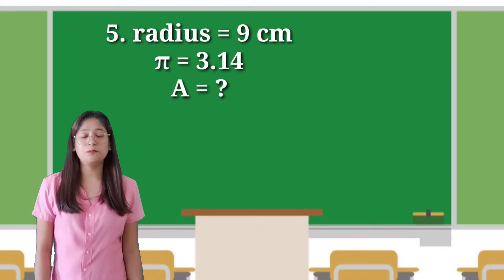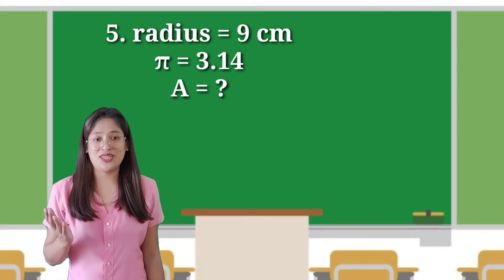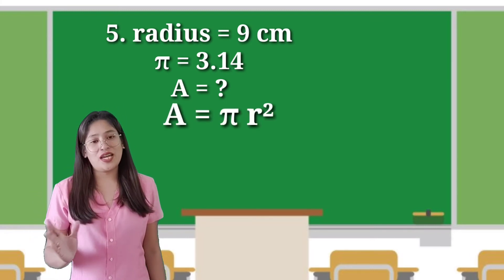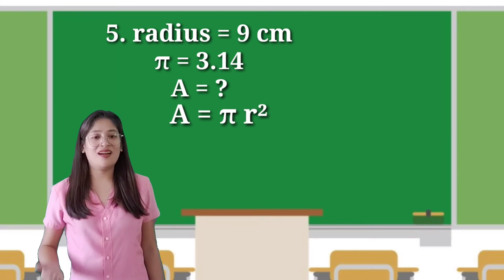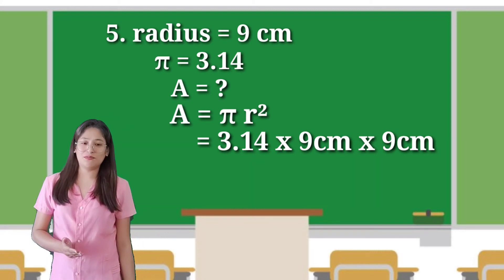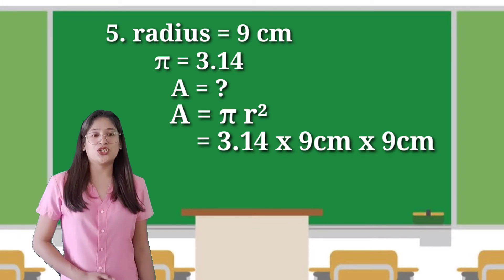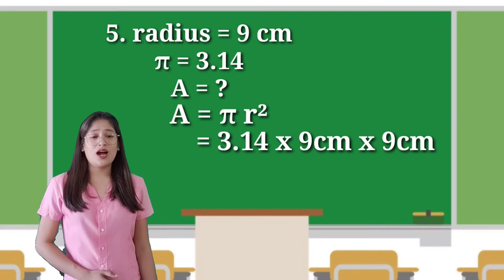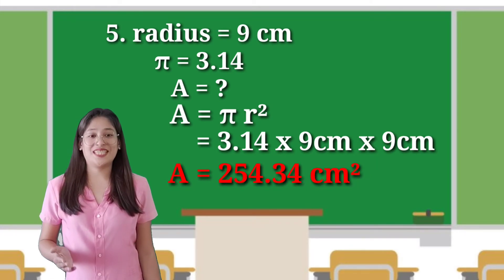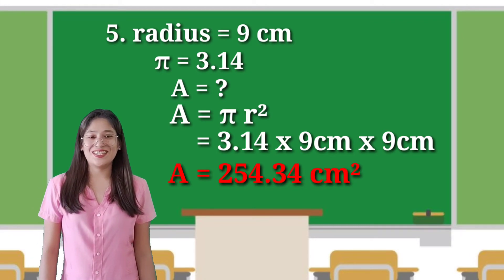Number 5, the last number: the given is 9 centimeters. We will find the area using the formula area equals pi r squared. Pi is 3.14, multiplied by 9 centimeters, and multiplied again by 9 centimeters. Anong makukuha natin? 254.34 centimeters squared. Nakuha niyo ba mga bata? Magaling!